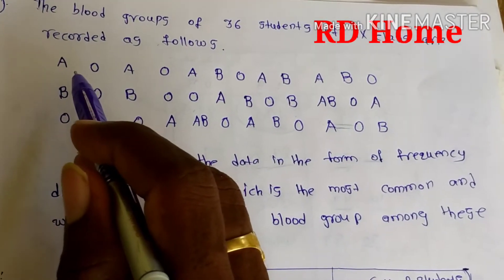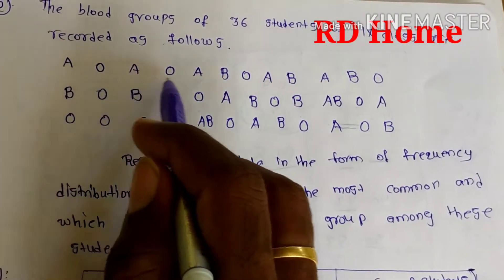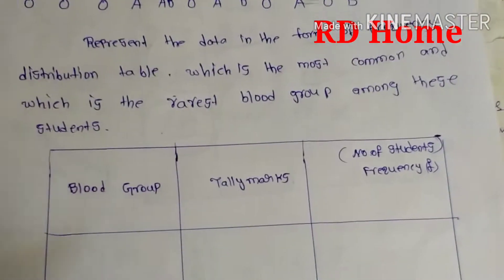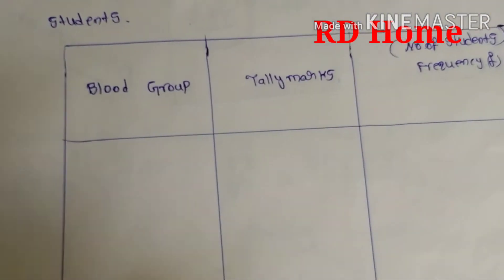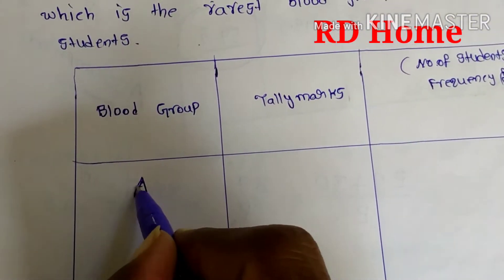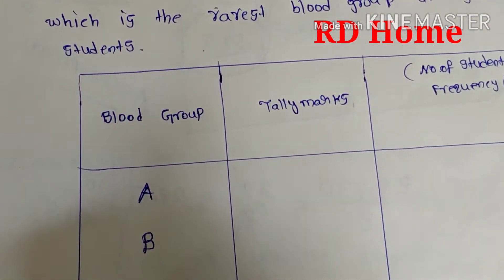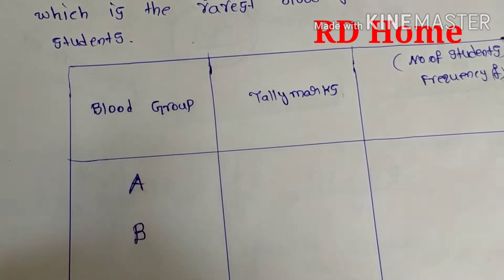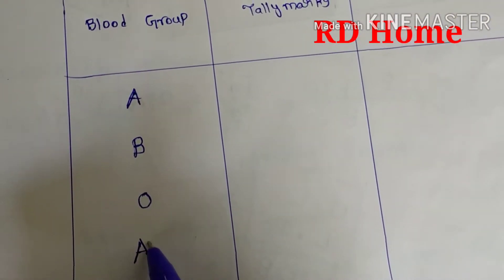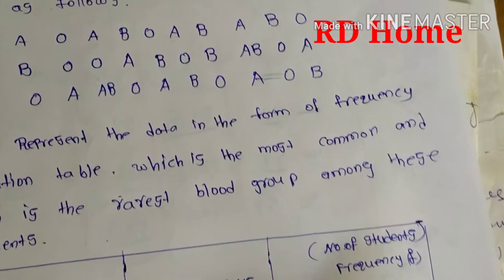First, you can see here the blood groups are A, O, B, and AB. For our solution, we simply write down the four blood groups: A, B, O, and AB.